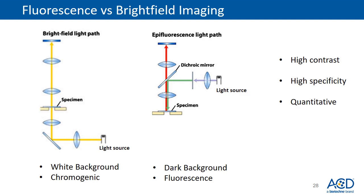One main difference between these two imaging modalities is the location of the light source. In bright field imaging, the light source is located on the other side of the specimen with respect to the detector. This means the light goes through the specimen and enters the eyepiece, giving a nice white background. In fluorescence imaging, the light source is on the same side as the eyepiece; light shines on the specimen and the fluorescent light from the specimen is detected, giving a nice dark background. For image analysis, images should have high contrast; fluorescent images may have higher contrast because of the dark background.